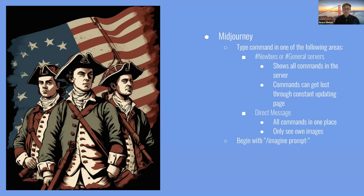With MidJourney, you ask to generate an image with forward slash imagine, and then you type in the prompt. At the end of the prompt, you're going to tell it the aspect ratio you want the image produced in. All of the images I just showed you have an aspect ratio of 8 to 10. The default aspect ratio is 1 to 1, so if you're okay with 1 to 1, you don't have to type that in at the end.